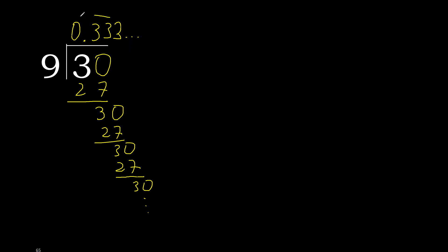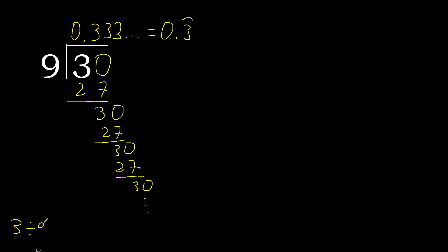3 divided by 9 is here — after the decimal point, 3 repeats. Therefore, like this: 3 divided by 9 equals 0.333... repeating.